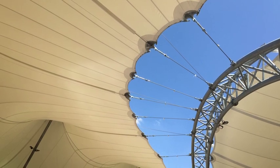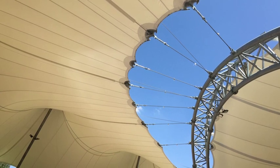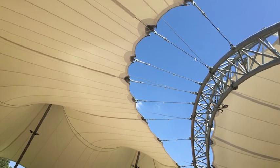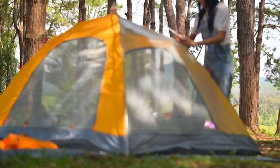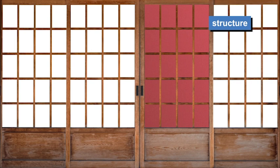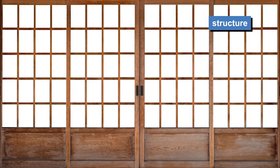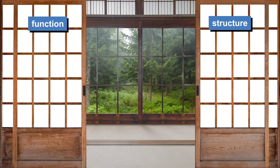Tensegrity-based designs often incorporate membrane structures. Thin, flexible material is stretched across a system of supports, creating a lightweight, durable structure. Take a tent for example — the tarp is the membrane and it stretches over a system of poles. The same principle is used in Shoji. The structure of the interwoven bamboo frame provides compression, and the translucent paper serves as a thin, tension-holding membrane.